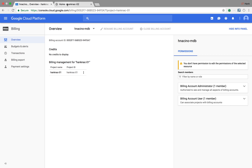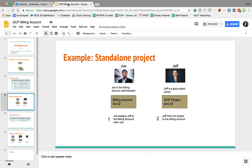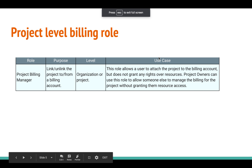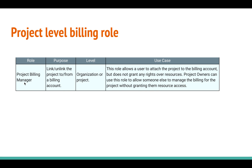On the second project I want to do something a little different. Let me introduce another role — this one is at the project level, not the billing account level. It's called the project billing manager, and it has the ability to link and unlink a project to or from a billing account. In this scenario, the project owner Jeff wants to delegate the linking task to another user, Jane, rather than doing it himself.